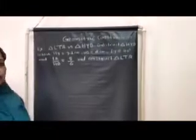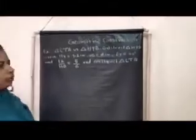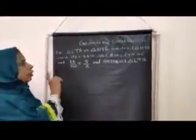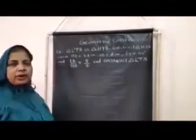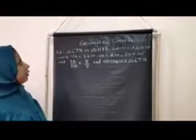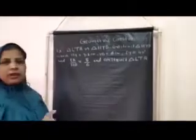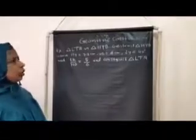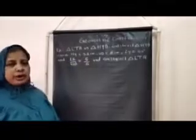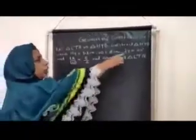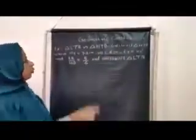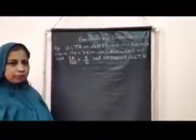Last period we learned how to draw similar triangles when all three sides are given — that is the SSS type construction. Today we are going to learn how to draw the similar triangle when one angle of the triangle and two corresponding sides are given. First let's draw the rough figure.